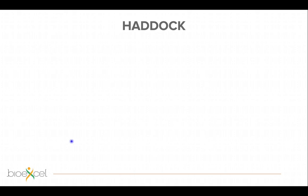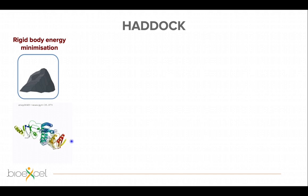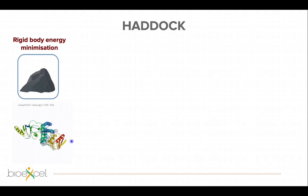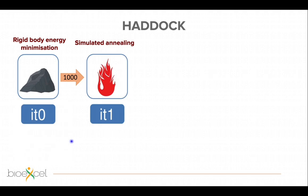The first step is the rigid body energy minimization. This is the step where you have two proteins that are rigid — they are being separated in space, rotated and translated, and then being pulled together by the restraints you define, ideally derived from the experimental information you have.